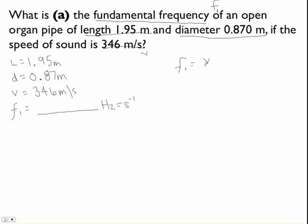We have two ways to find it. We can do the speed over the wavelength, or we can do speed divided by 2L, with this being the length of the pipe. So either one of these we can use. We don't have a wavelength, so I wouldn't recommend this one. It would probably be more difficult than it's worth.